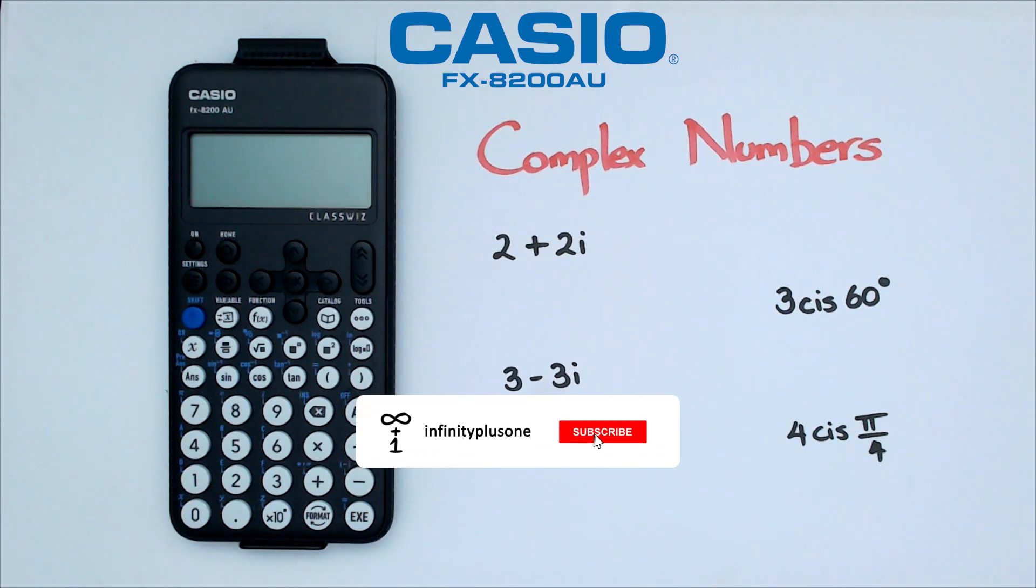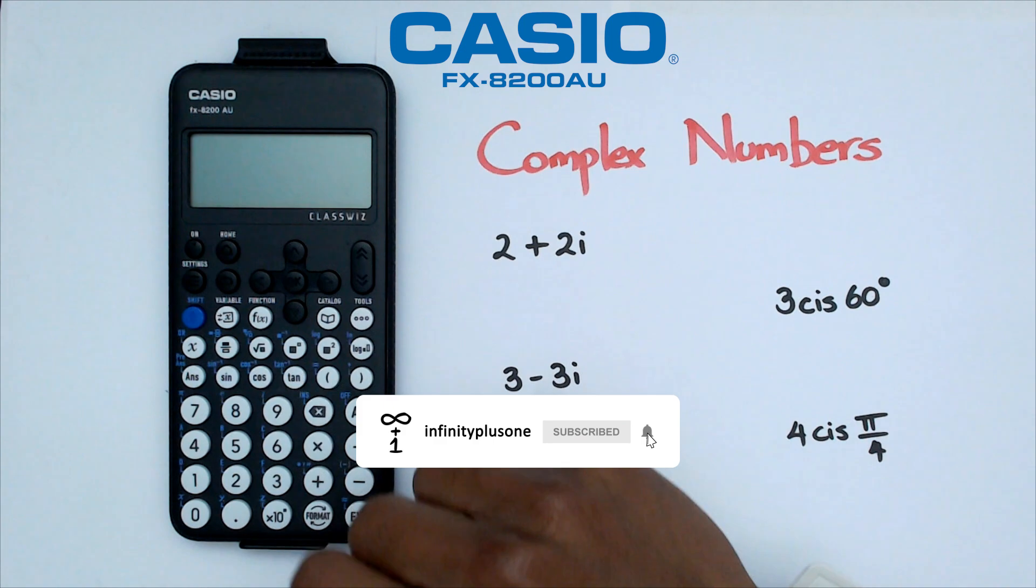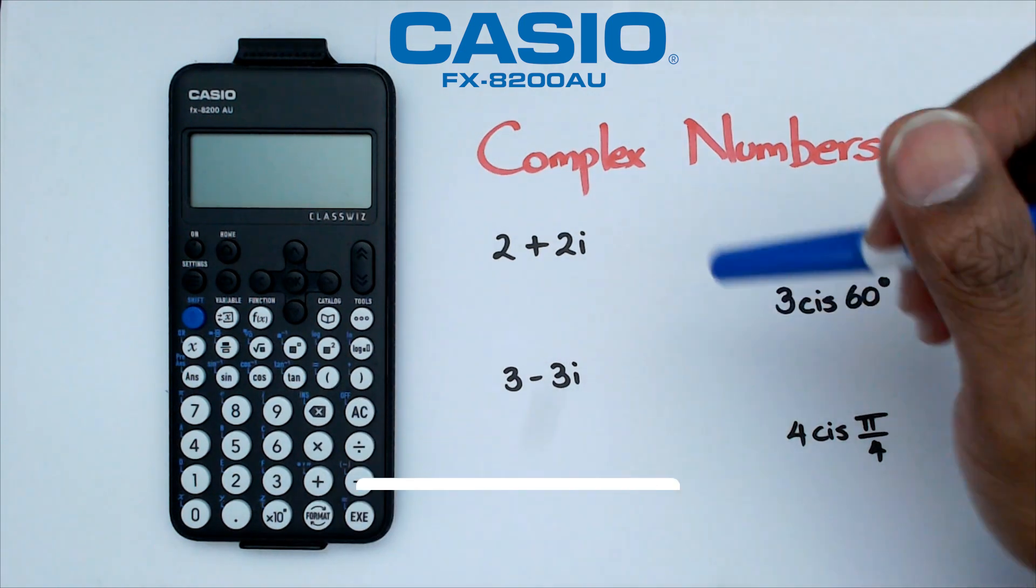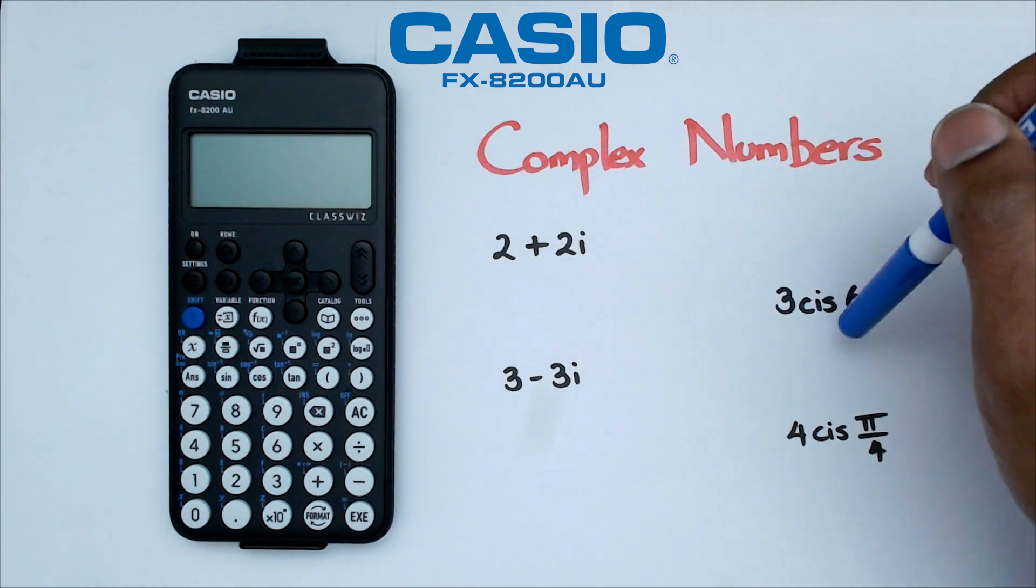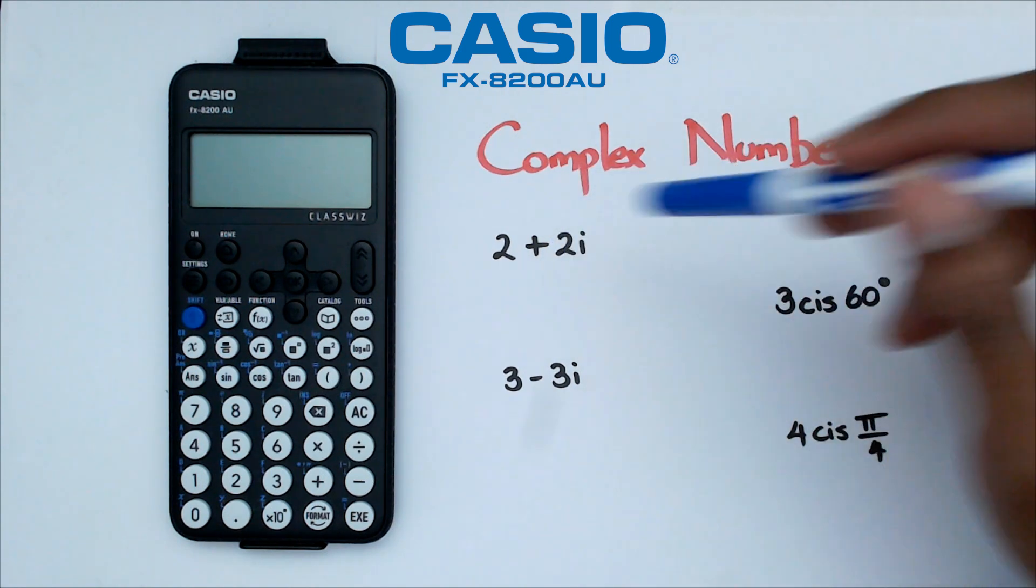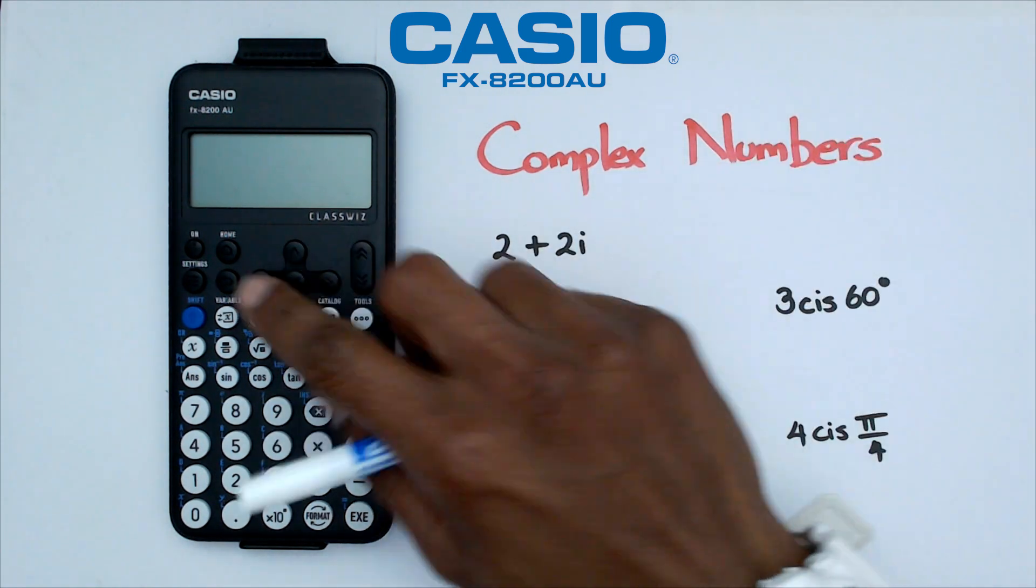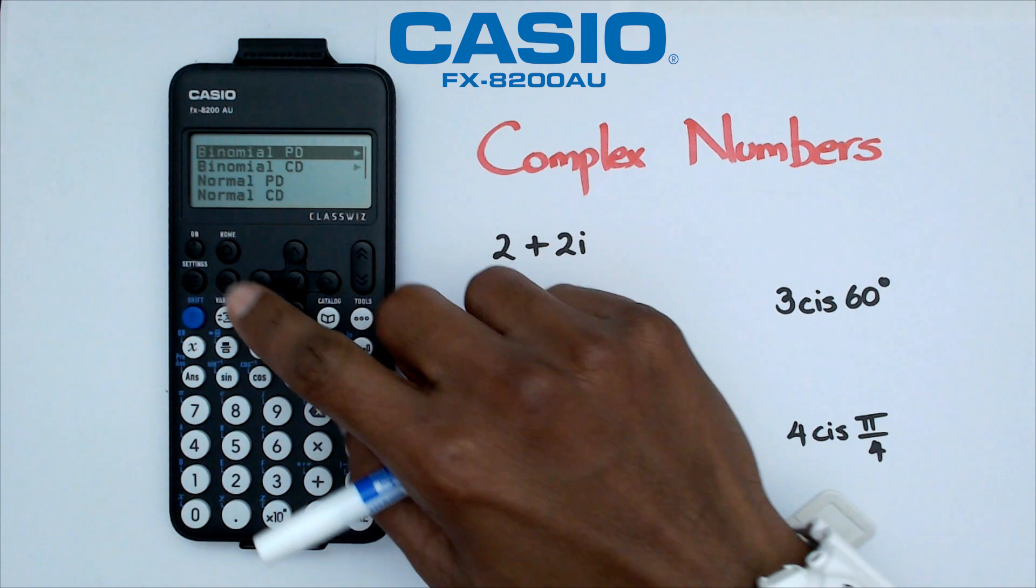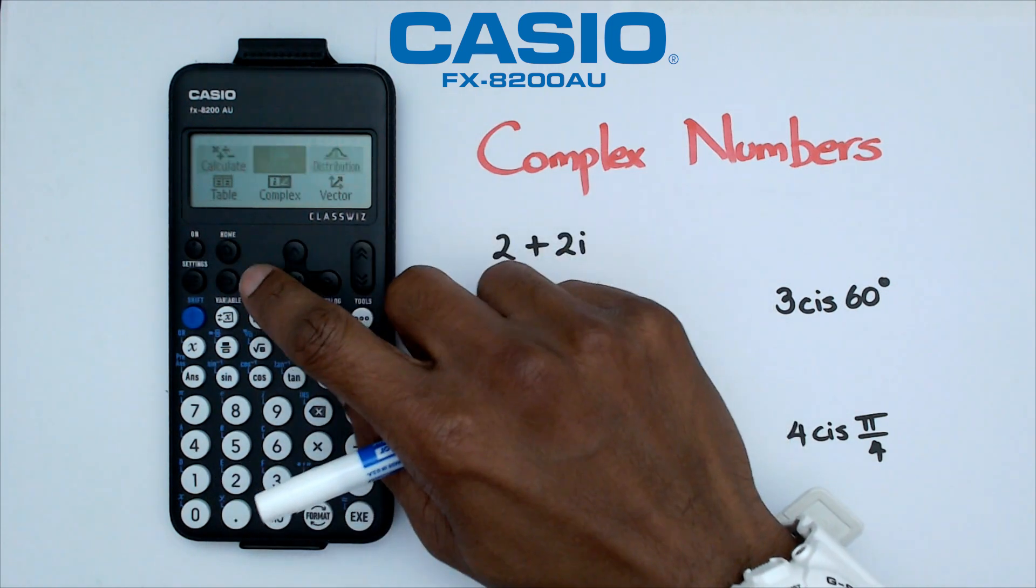All right, so for the first couple of questions here, I'm going to be working in degrees. I want to show you folks how you can go from rectangle form to polar form. So here we've got 2 plus 2i and I want to convert this to polar form. So what I'm going to do is I'm going to switch on the calculator. Let's go into home menu, go into calculate.